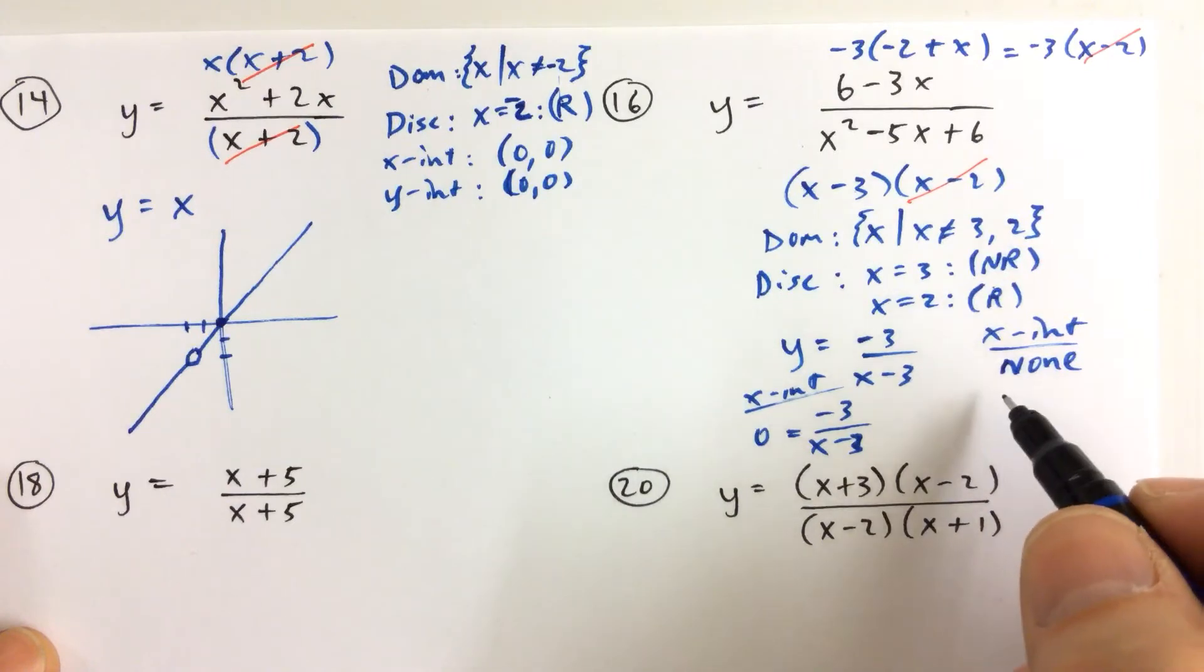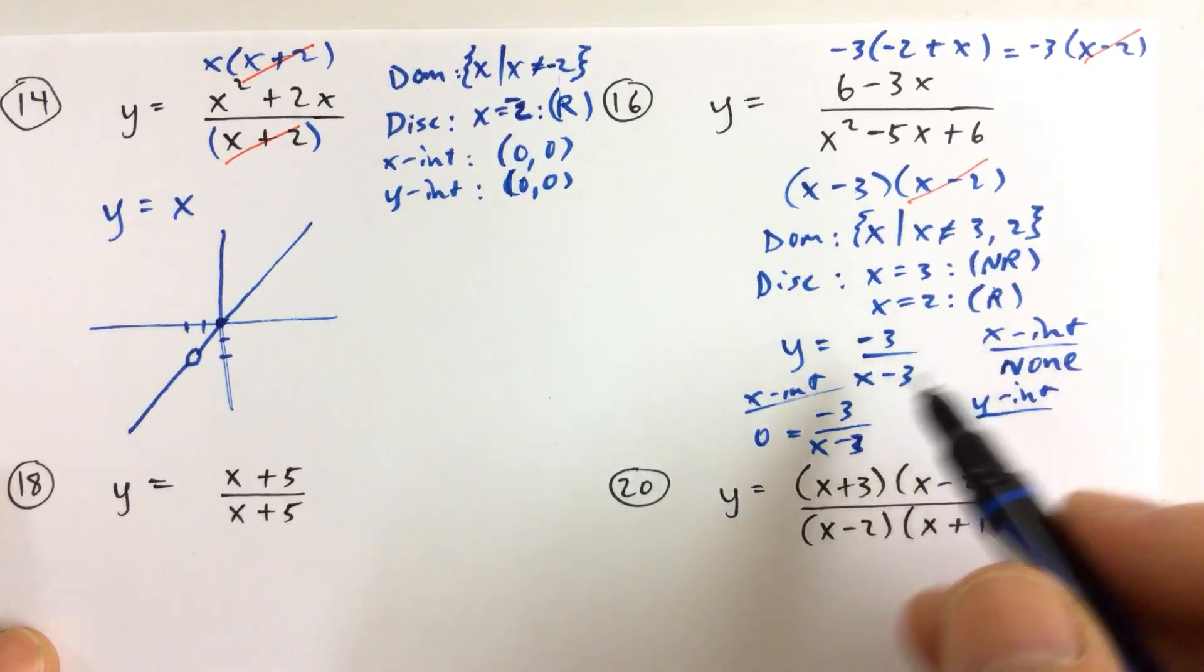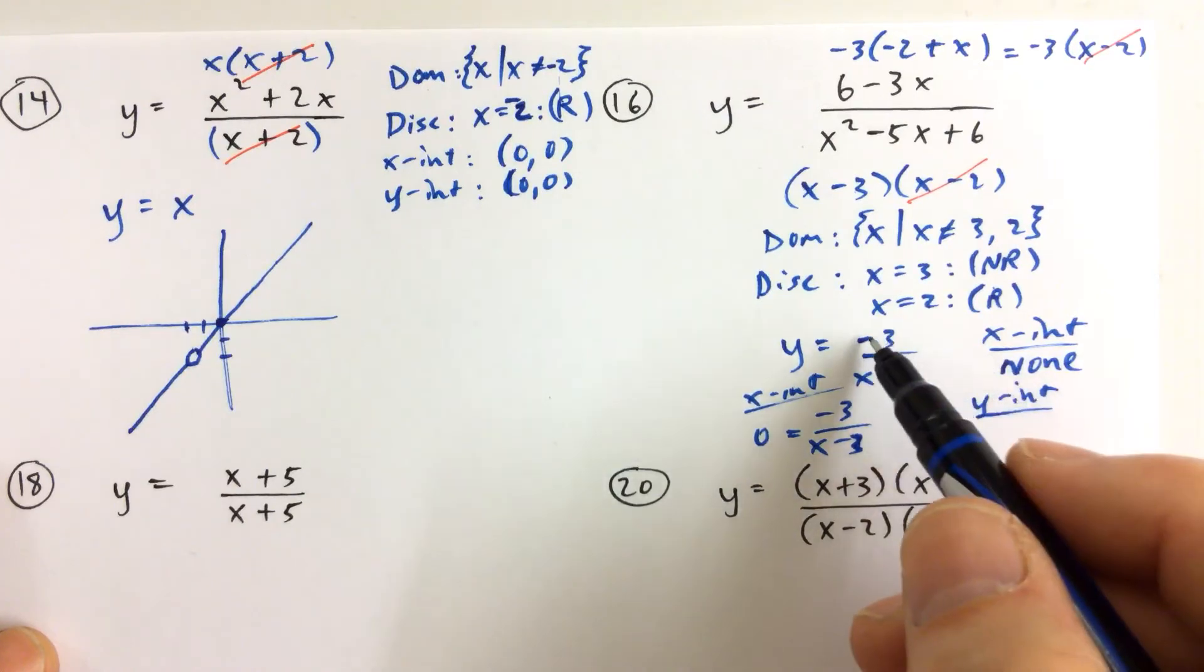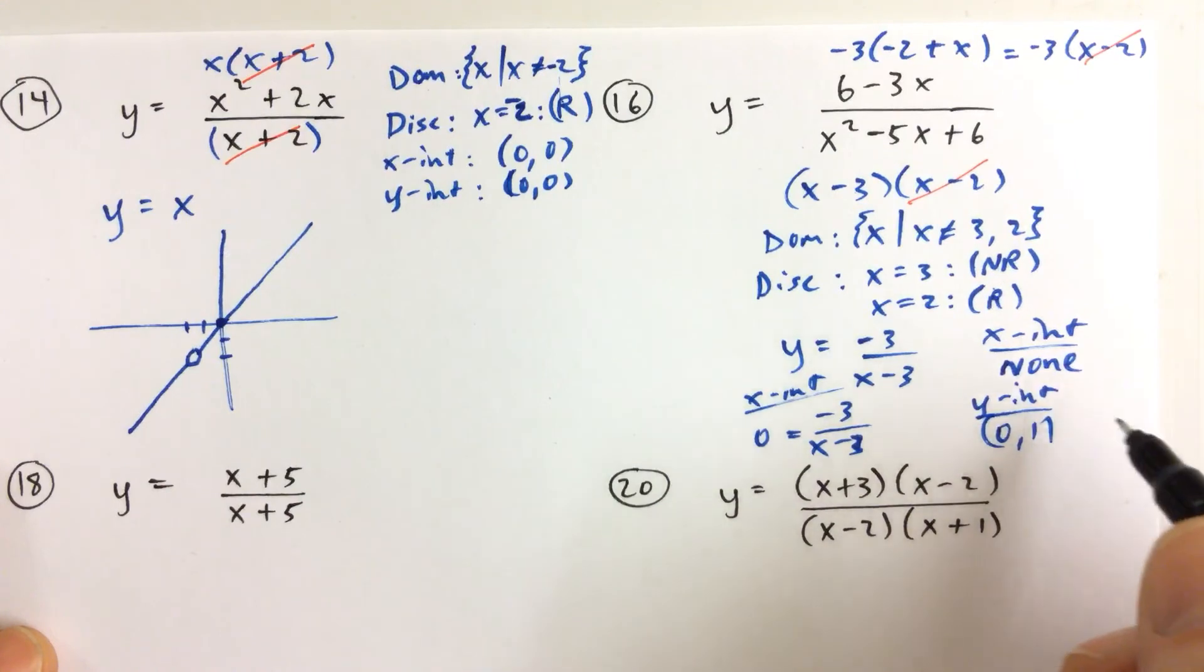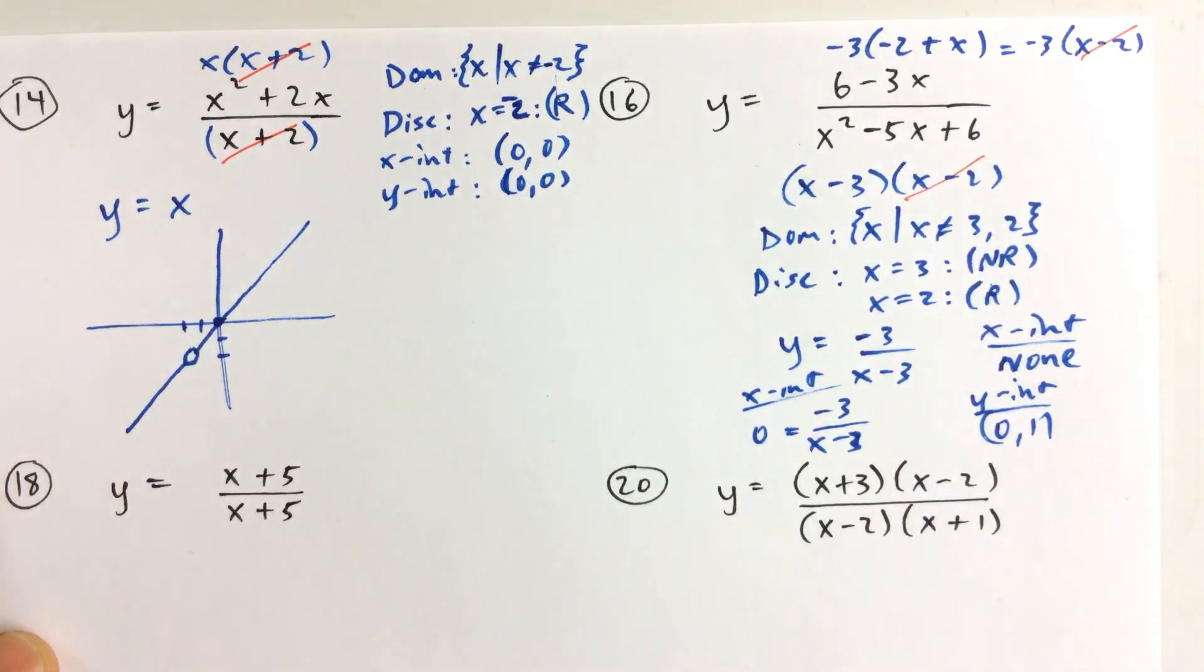And the y-intercept, on the other hand, is when we let x equals 0. And when we let x equals 0, we get y equals negative 3 over negative 3, which is 1. So we have 0, 1, which is our y-intercept. And that's it.